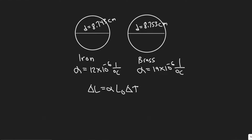In this problem, we're told a brass plug is to be placed in a ring made of iron. At 15 degrees Celsius, the diameter of the plug is 8.753 centimeters and that of the inside of the ring is 8.743 centimeters. They must both be brought to what common temperature in order to fit? And then part B: what if the plug were iron and the ring brass?